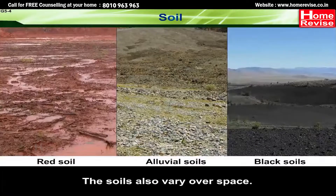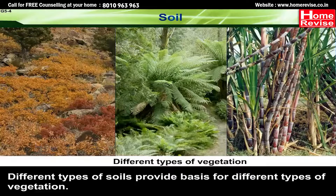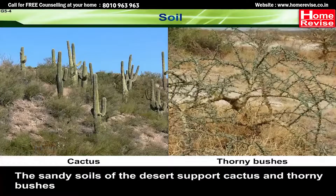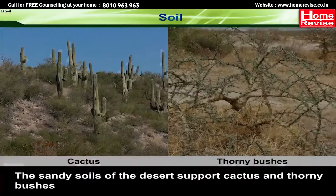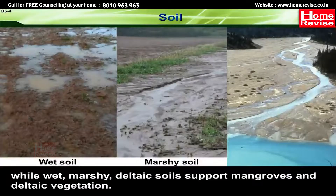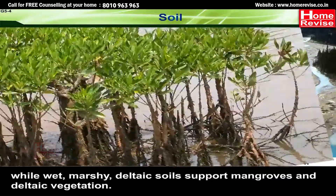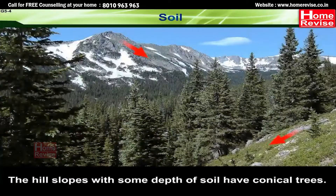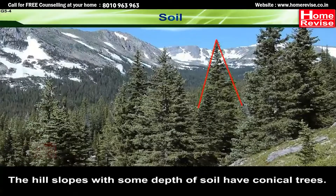The soils also vary over space. Different types of soils provide the basis for different types of vegetation. The sandy soils of the desert support cactus and thorny bushes, while wet marshy deltaic soils support mangroves and deltaic vegetation. The hill slopes with some depth of soil have conical trees.